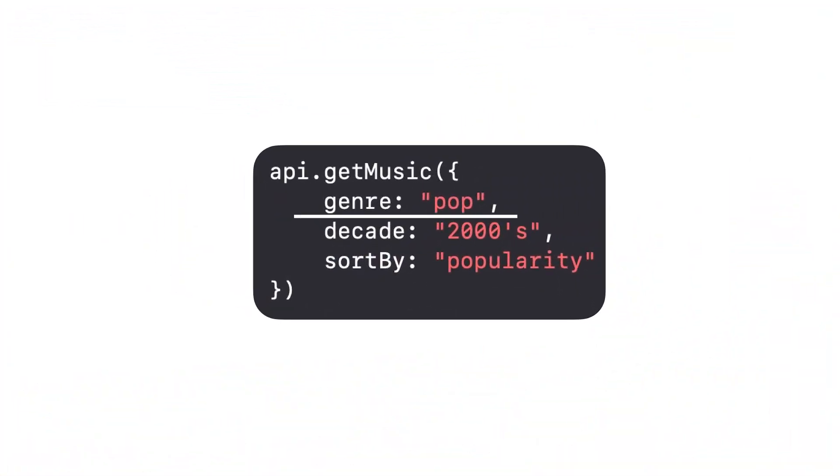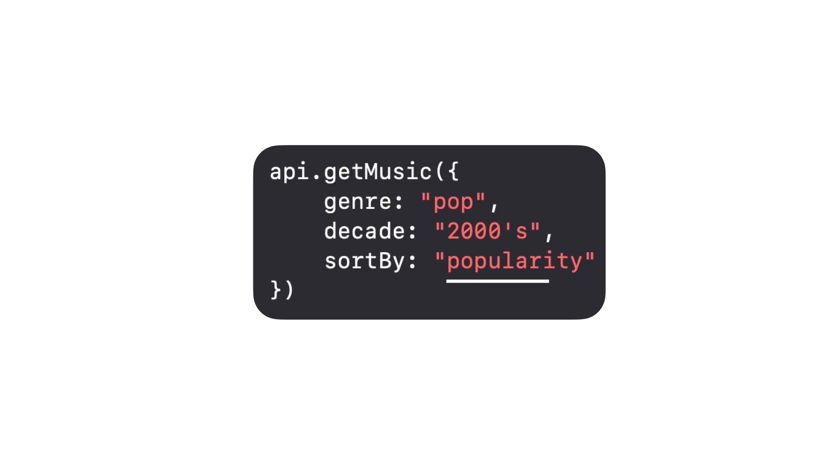We specify the genre as pop, the decade as the 2000s, and sort by popularity. The API call then fetches the relevant playlists and the requested music starts streaming for the user.